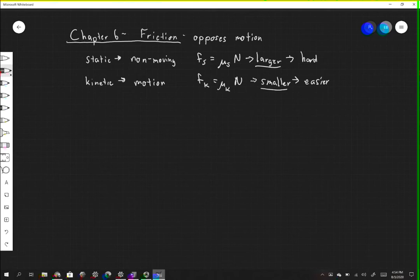So another force that we commonly encounter in nature is that of friction. And the purpose of friction is really to oppose motion, to stop things from moving. And there are two different kinds, two different manifestations of friction that we'll usually talk about in an introductory physics course.